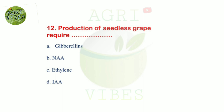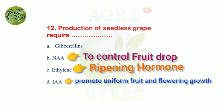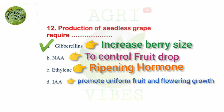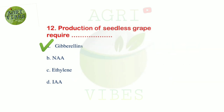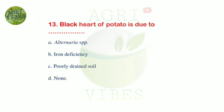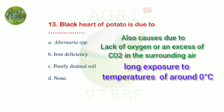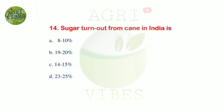Next question: production of seedless grape requires — options: gibberellins, NAA, ethylene, and IAA. Correct answer is gibberellins. For the production of seedless grape varieties, gibberellins are required. Next question: black heart of potato is due to — options: Alternaria species, iron deficiency, poorly drained soil, and none of the above. Correct answer is option C, poorly drained soil or lack of oxygen.